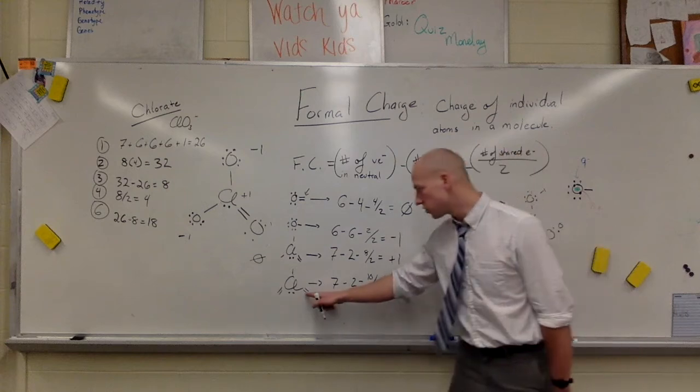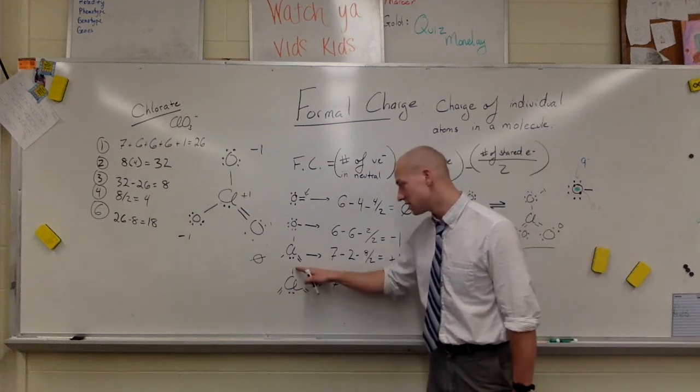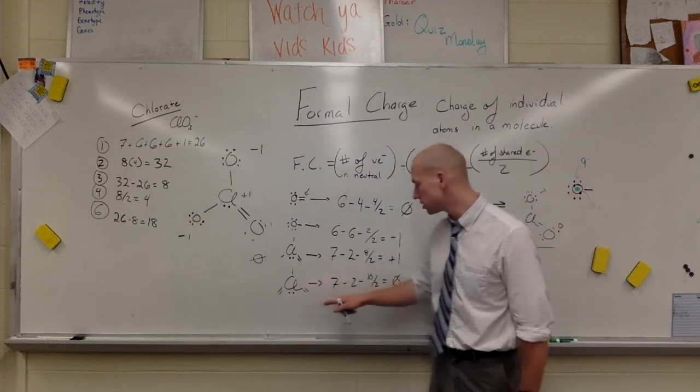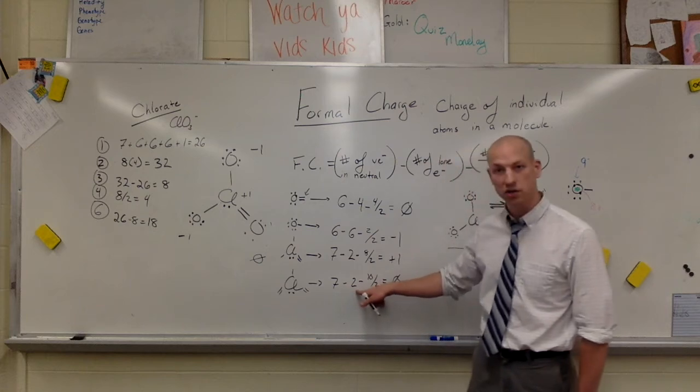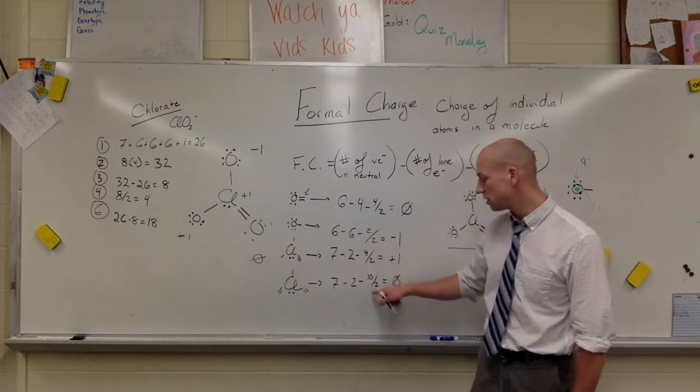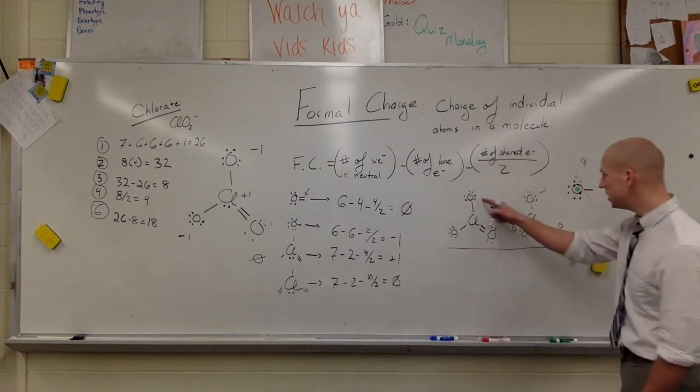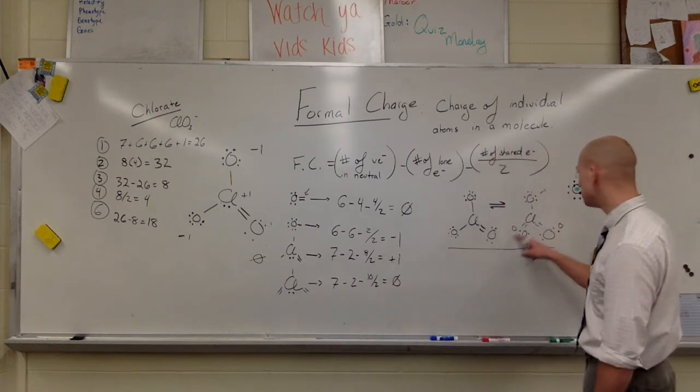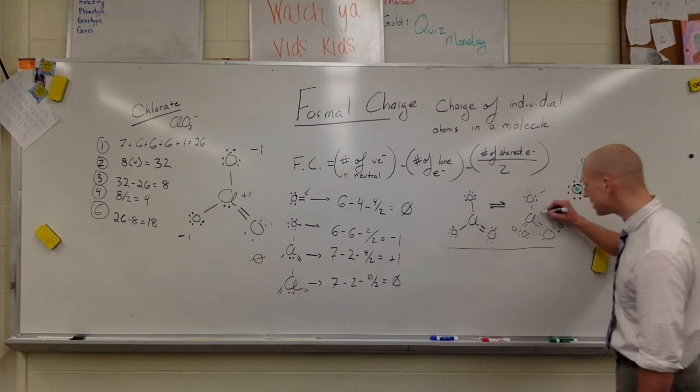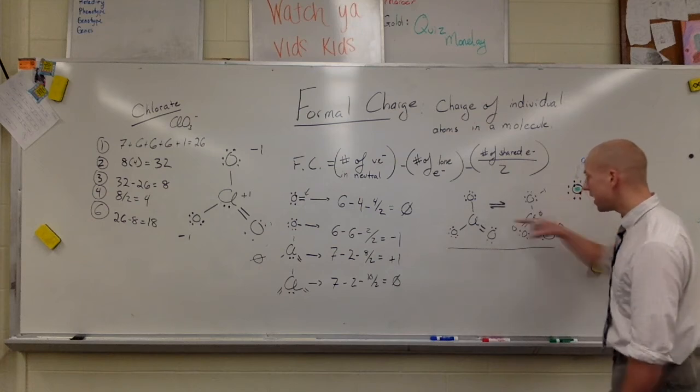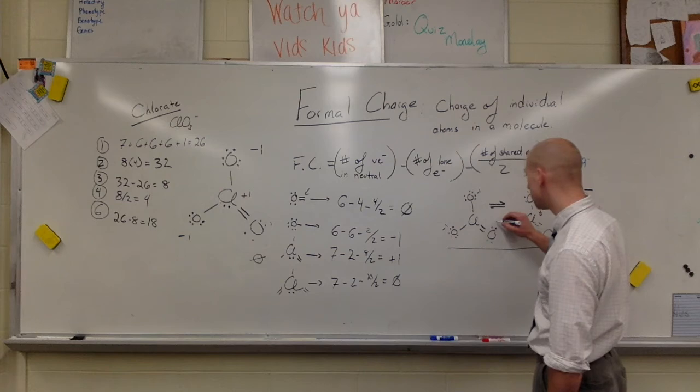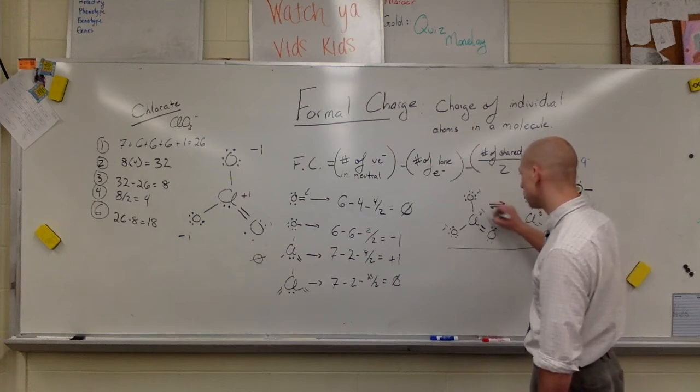But the chlorine now, with two sets of double bonds, a single bond and two lone electrons, that's seven minus the two electrons, minus the ten shared electrons divided by two, gives it a formal charge of zero. So here we've got a formal charge of zero and negative one. This ends up being zero as opposed to negative one, negative one, zero, and positive one.